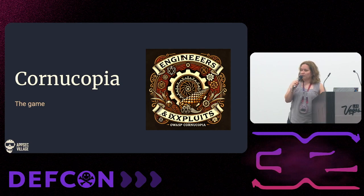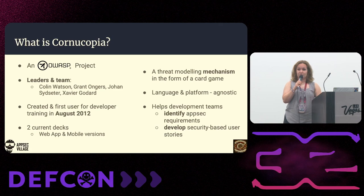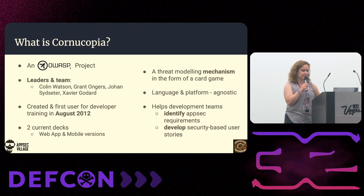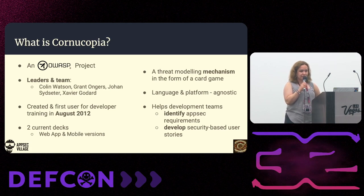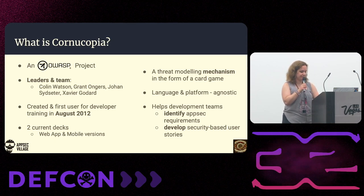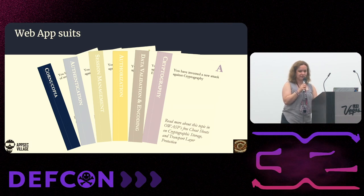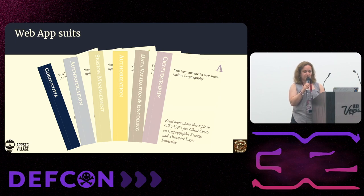A little bit about Cornucopia. It is an open source project. It was built in 2012 and it currently has two decks, but a lot of expansions are planned for different industries — for AI security, for example. It's language and platform agnostic and it helps developers think about identifying and developing security user stories. These are the suits of the web application version, focused around authentication, authorization, data security and cryptography, session management, and an overall threat category called Cornucopia.